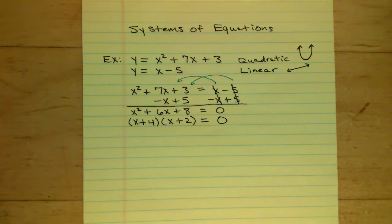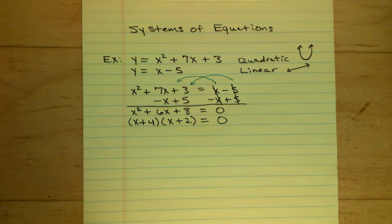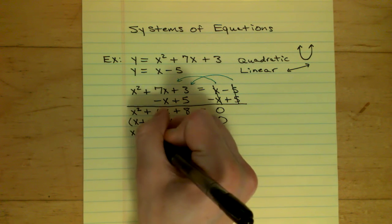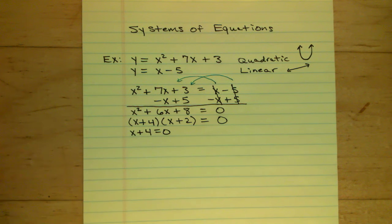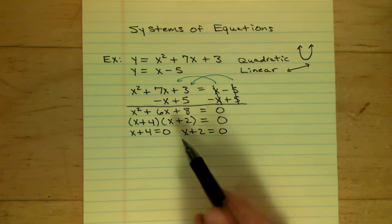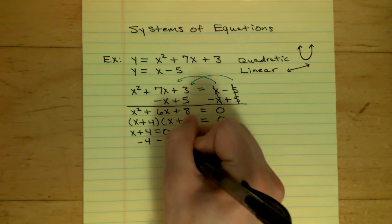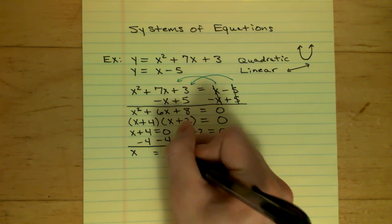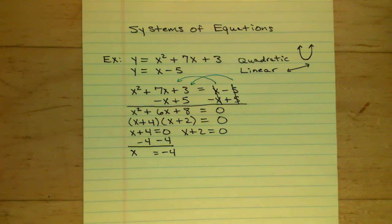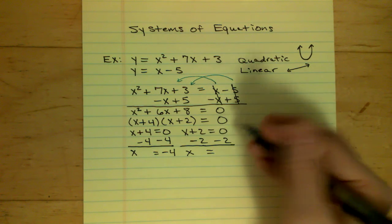So now I have two different factors. The first factor is x plus 4, and the second factor is x plus 2. I get two equations: x plus 4 equals 0, and x plus 2 equals 0. For x plus 4 equals 0, I subtract 4 from both sides and get x equals negative 4. For x plus 2 equals 0, I subtract 2 from both sides and get x equals negative 2.